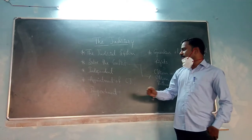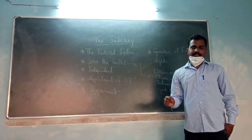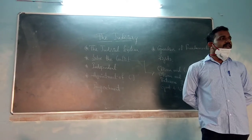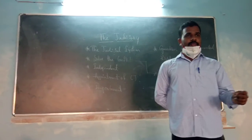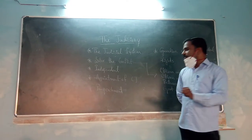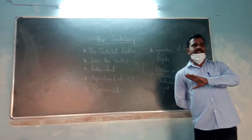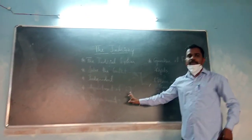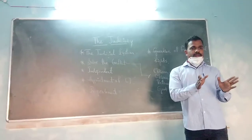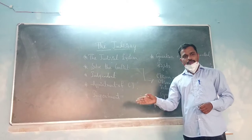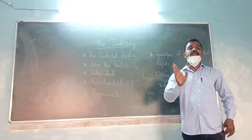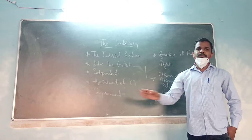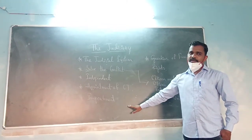Next one is the appointment of the Chief Justice. The Chief Justice of the Supreme Court is appointed by the President. The most senior Justice in the Supreme Court will become the Chief Justice of the Supreme Court, as well as for the High Court.